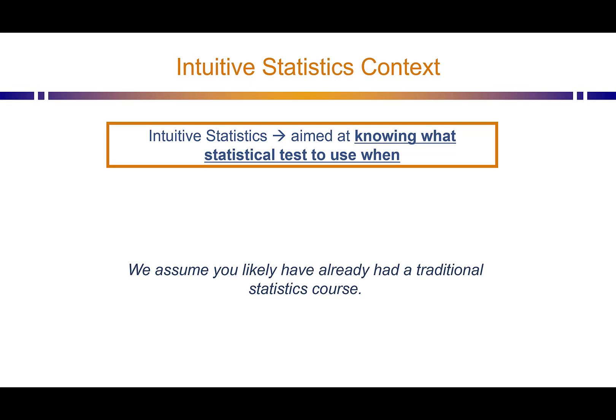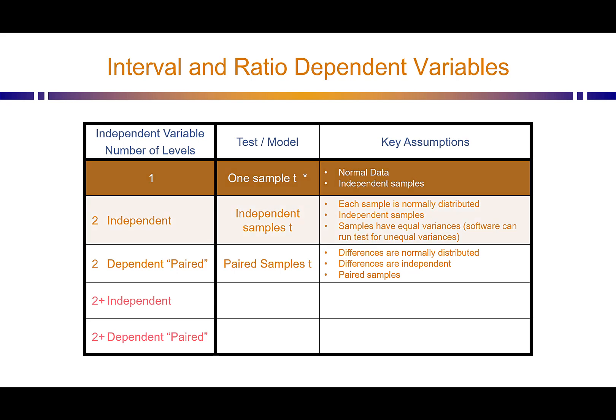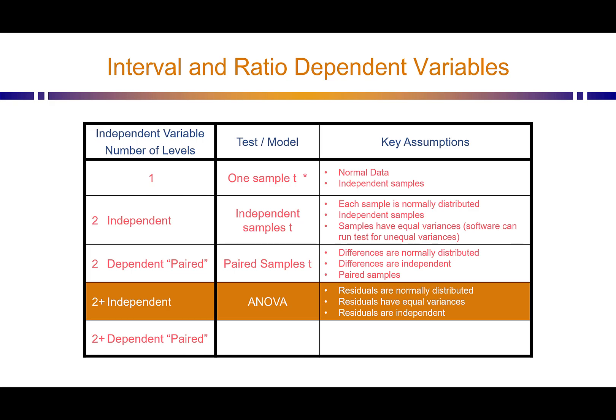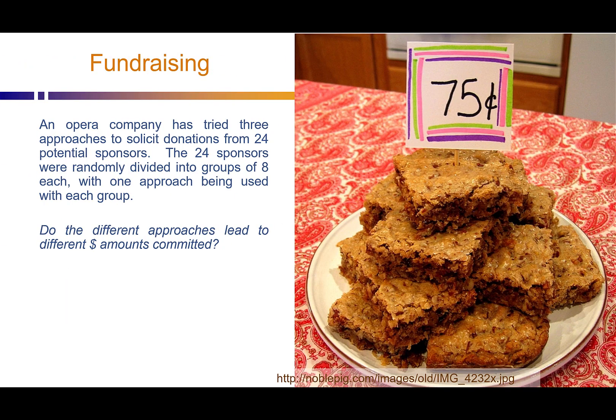In this case, we're focusing on Analysis of Variance. We've worked all the way down through the different types of t-tests, and this set of videos is about Analysis of Variance. Our example was about an opera company that had tried three different approaches to solicit donations. They had 24 potential sponsors, and they split them up into three groups of eight potential sponsors each. The question here is, do the different fundraising approaches lead to different dollar amounts committed by the sponsors?